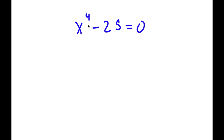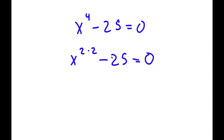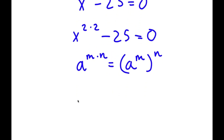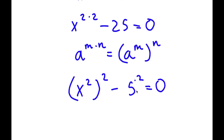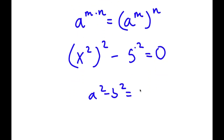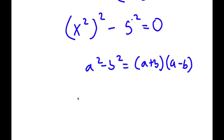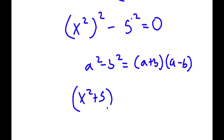In this problem, I have x to the power of 4 minus 25 is equal to 0. I'm going to rewrite x to the power of 4 as x to the power of 2 times 2. Using the rule that a to the power of m times n equals a to the power of m to the power of n, I can write this as x squared to the power of 2 minus 5 squared equals 0. Using the difference of squares — a squared minus b squared equals a plus b times a minus b — this becomes x squared plus 5 times x squared minus 5 equals 0.